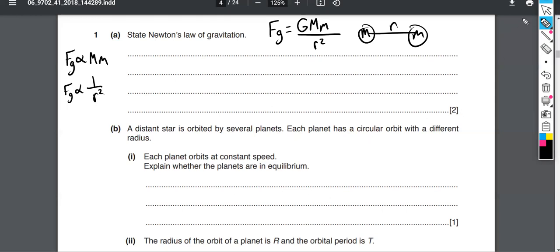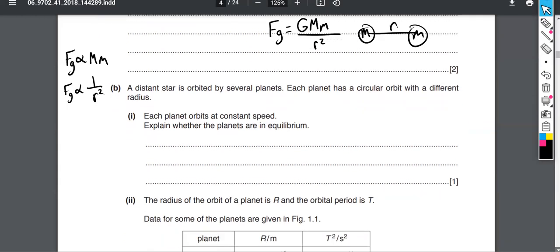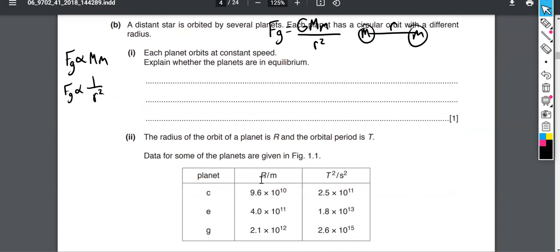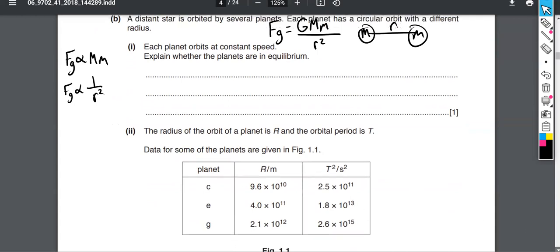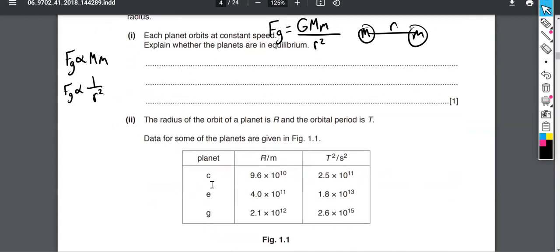And so we're given some data here. The radius and the orbital period squared for planets C, E and G. This is a typical naming convention for exoplanets where they're usually named after the star, where the star is like the A object. And then the planets are B, C, D, E, and so on.